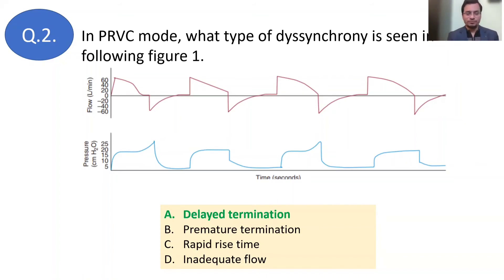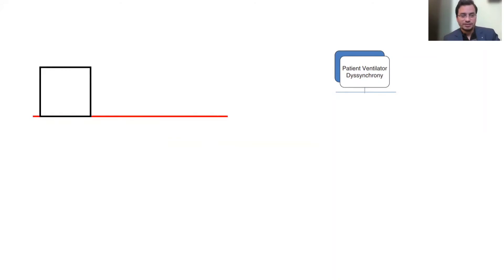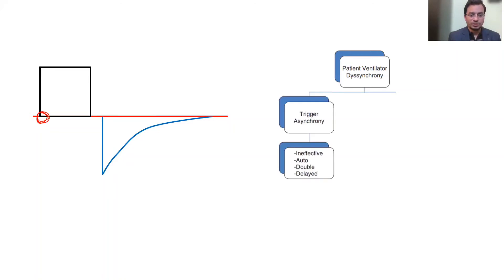To understand the types of dyssynchrony and how to solve them, let's classify patient-ventilator asynchrony based on the various phases of the ventilator breath. Consider a flow-time scalar in square wave pattern for a volume control mode — inspiration and then expiration. The start of the breath is called the trigger, and most commonly asynchrony occurs during the trigger phase. This is trigger asynchrony.